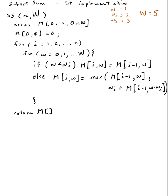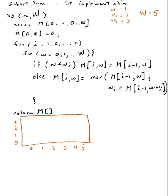The first thing we have to do is create an array with n plus 1 rows and w plus 1 columns. So the rows go from 3 down to 0, and the columns go from 0 up to 5. The first thing I do is initialize the 0th row to have all elements 0 in it.